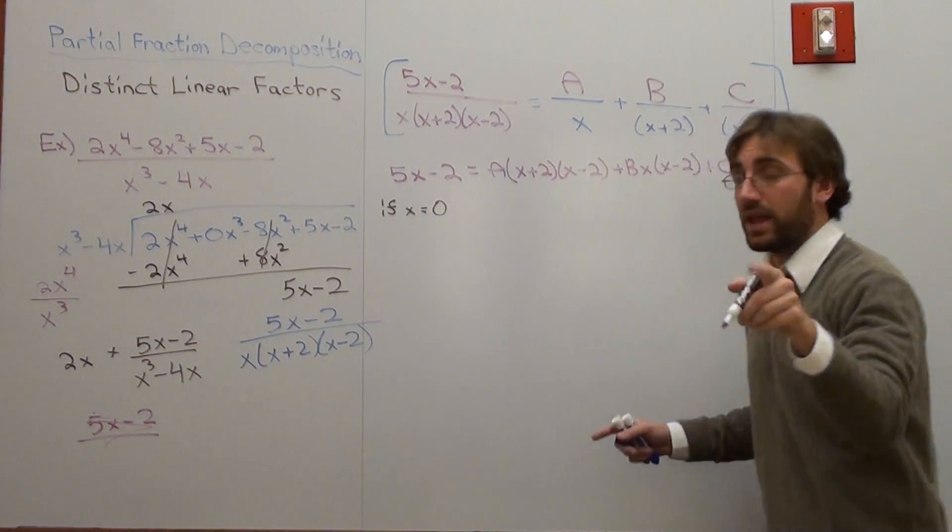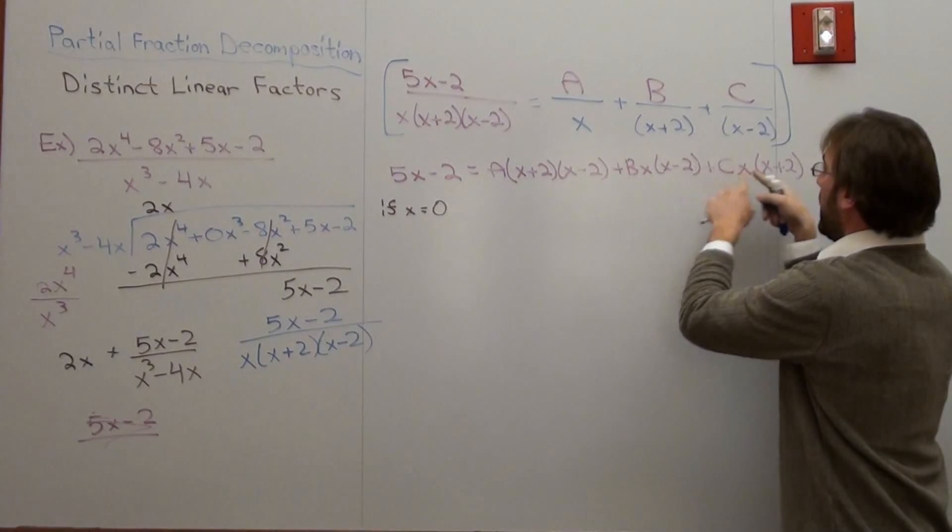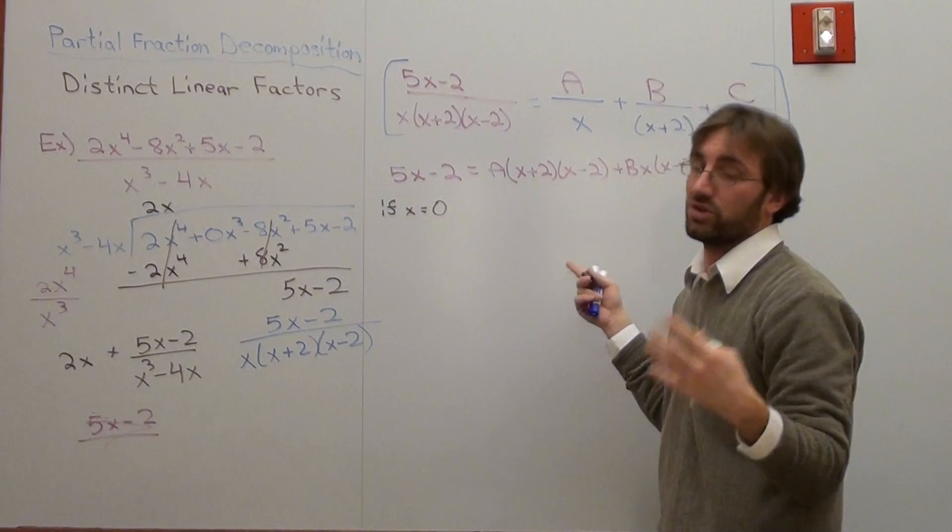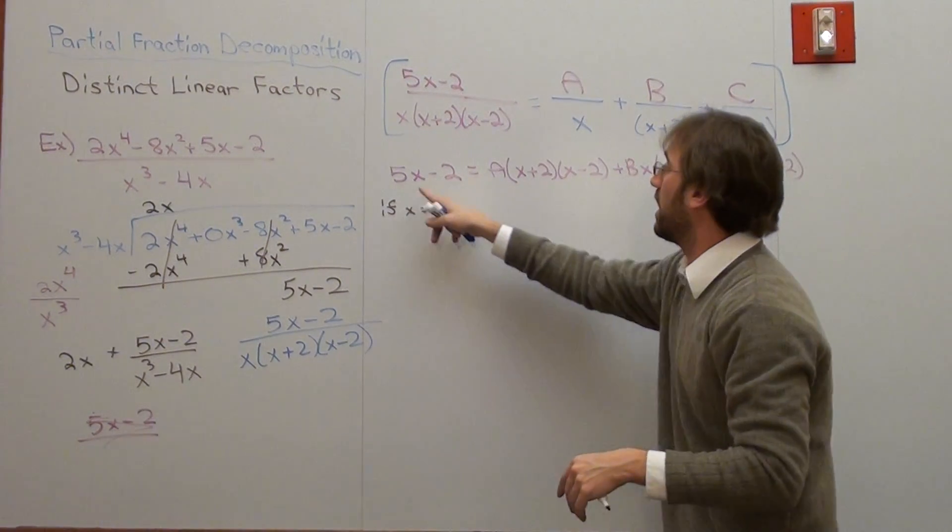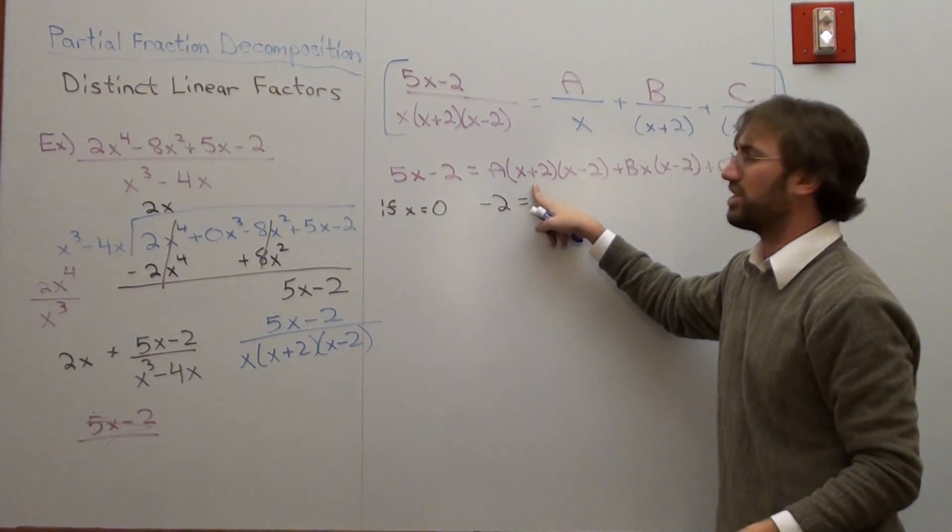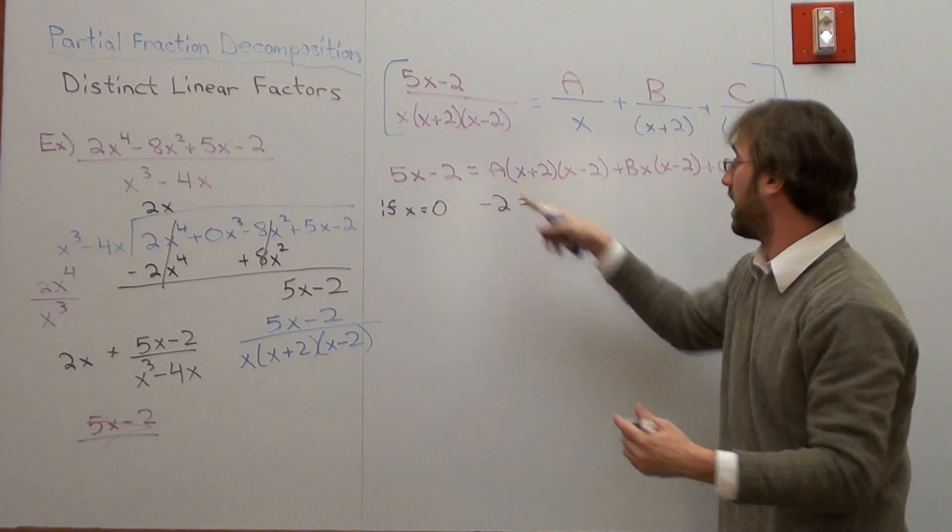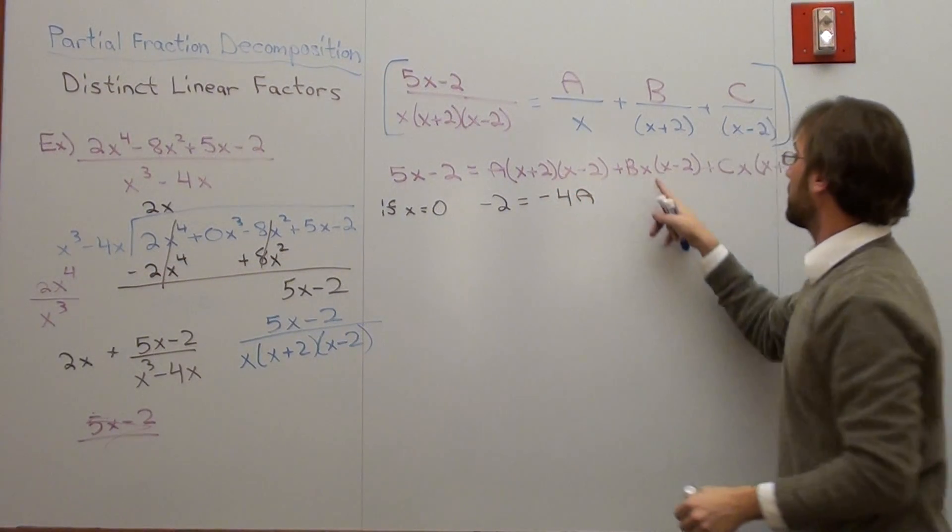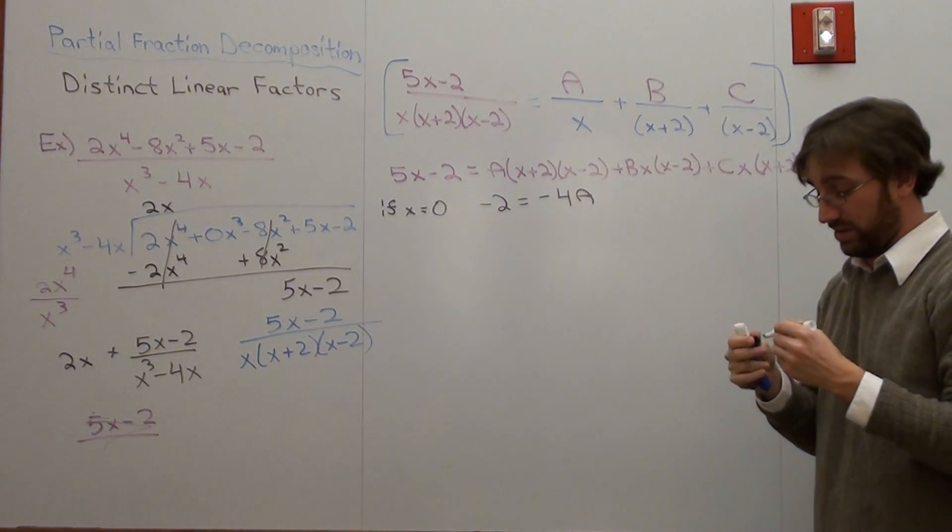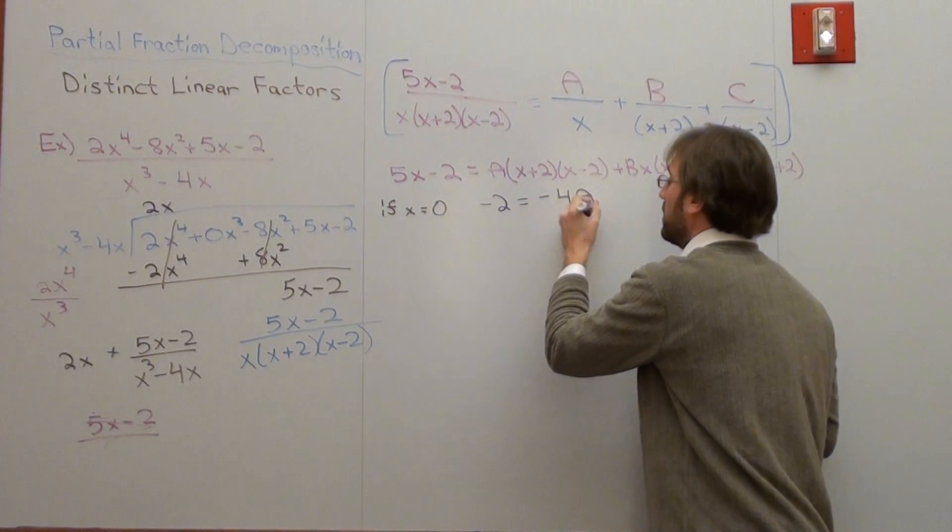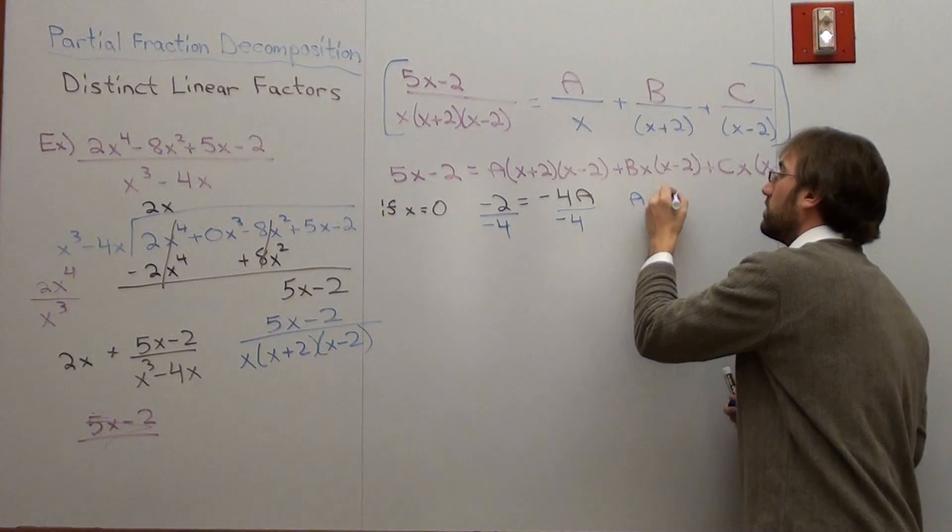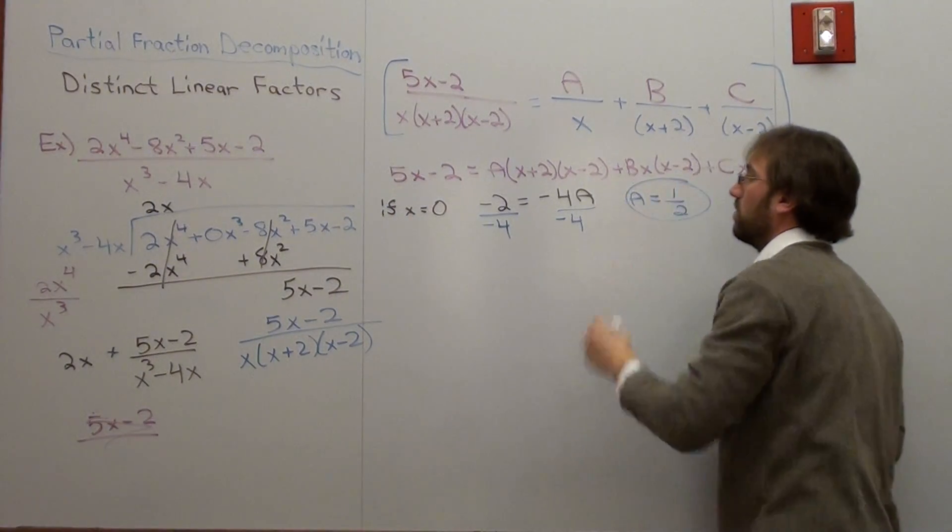And the reason why is, if x is 0, then all of a sudden this will go away, and this will go away, but this one will stay around. So I'm going to plug in 0 to every x that you see. I'm going to get 5 times 0 minus 2, which is negative 2, equals, okay, so that will be 2, that will be negative 2, which is negative 4, A. 0 times anything else is going to be 0. I'm going to figure out my A term, which is, divided by negative 4, A equals 1 half. There you go.